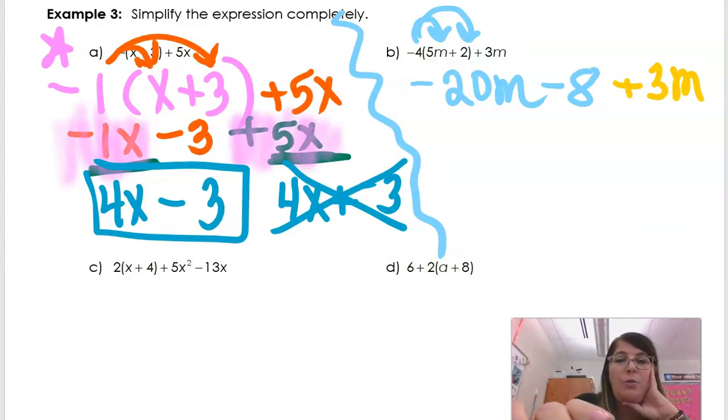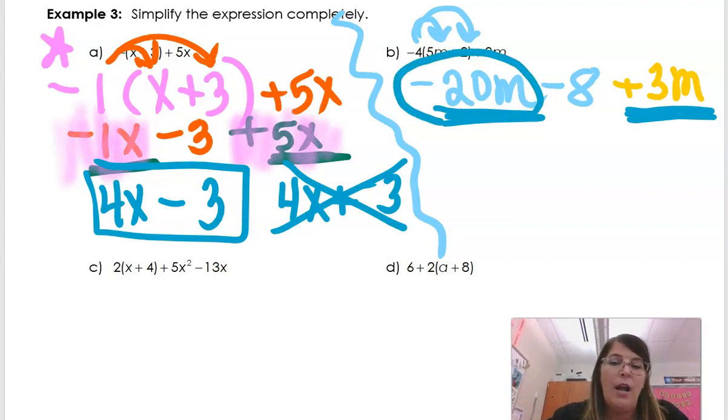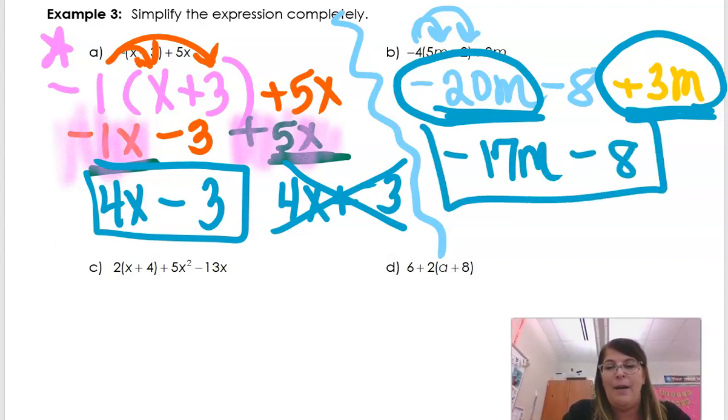That's my first step. That's work I would expect to see when you're working this out as well. And now I can look at the things that are the same. My m's are the same. Same variable, same exponent means they're like terms. So you take the sign of what comes before it. Negative 20m plus 3m. And that's negative 17m minus 8 because you didn't have any to combine with. And that's already in standard form.